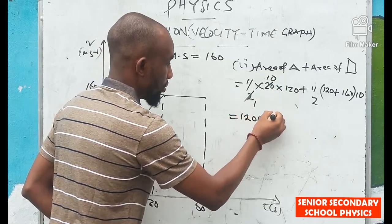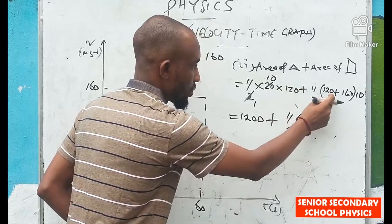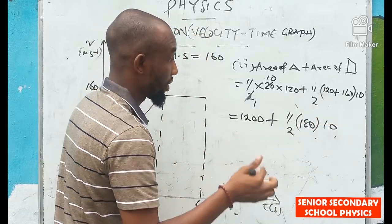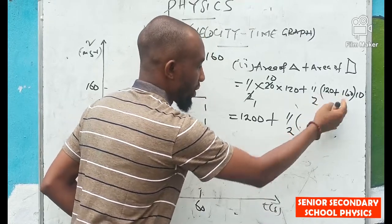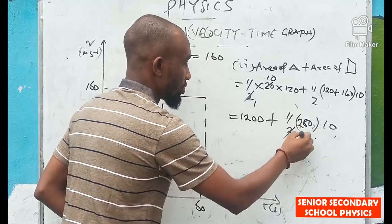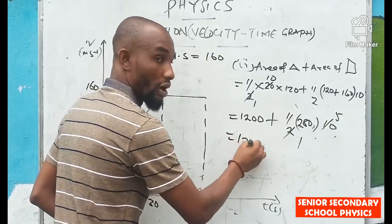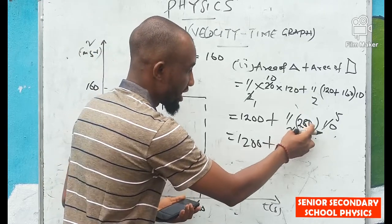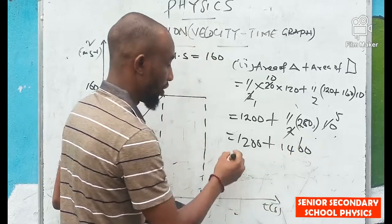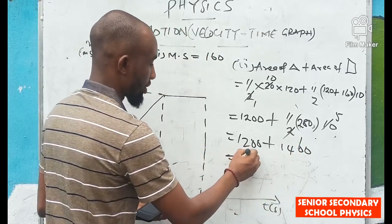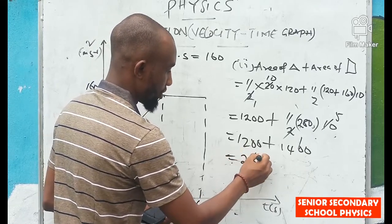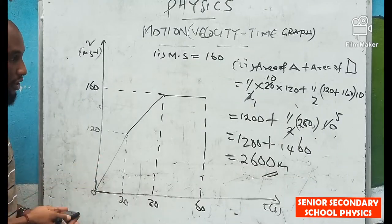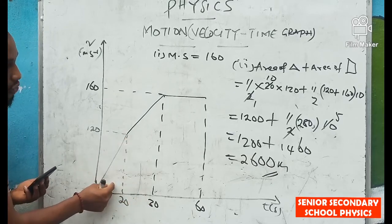So the total distance for the first 30 seconds, obtained by adding the area of the right-angle triangle and the area of the trapezium, is 2600 meters.